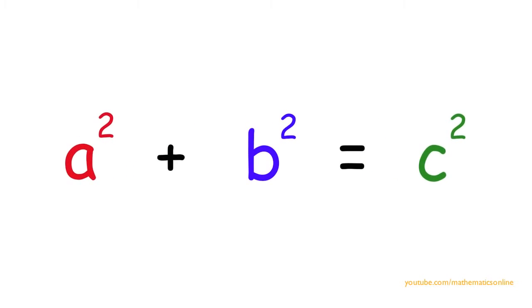A squared plus B squared is equal to C squared is the Pythagorean theorem, but where does the formula come from?